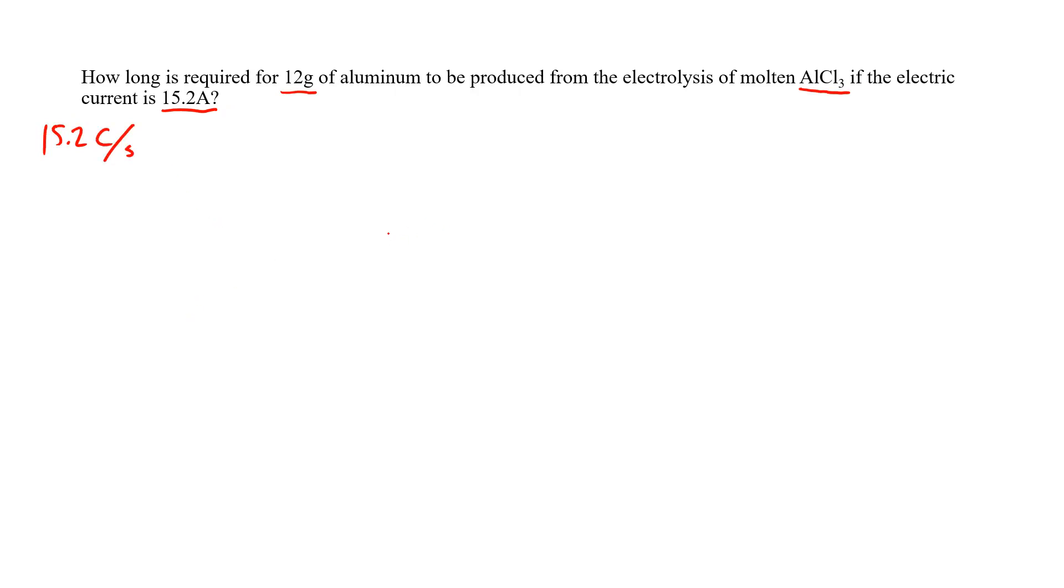Now what we can do with this information is basically start with our amount and work backwards. We know that 12 grams of aluminum, with 27 grams of Al being one mole of Al, means we're going to be making 12 divided by 27, which is 0.444 moles of Al.